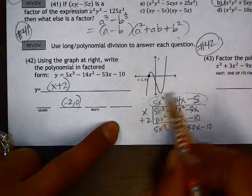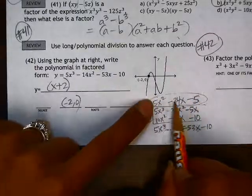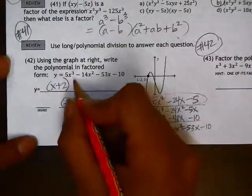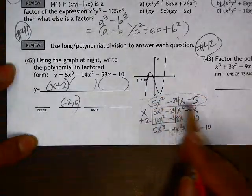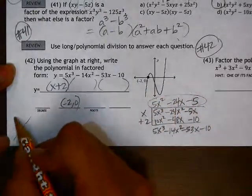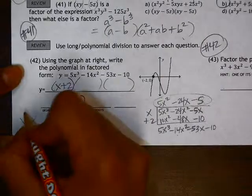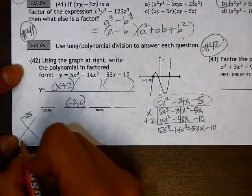So the expression we end up with here can be factored in order to find what the other factors are of this polynomial. So if we factor this, using the diamond here, we have negative 25 and negative 24.